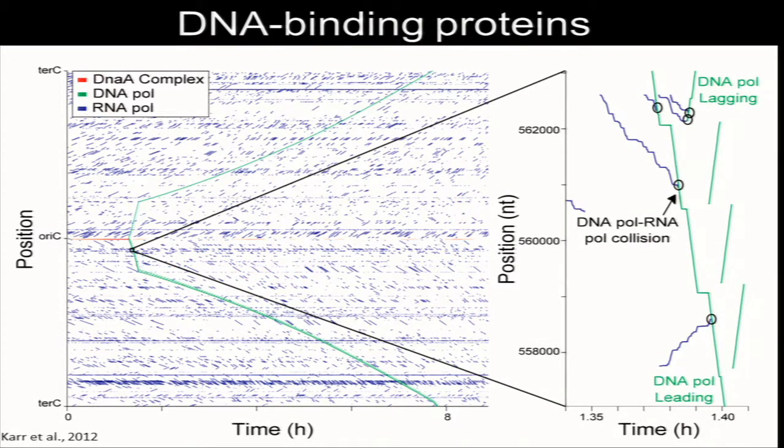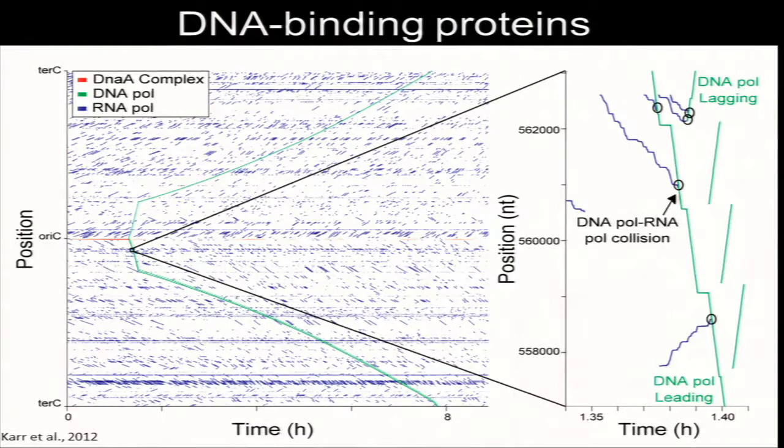You can also make predictions about data which is difficult, if not impossible, to validate experimentally. One example is predicted locations of DNA binding proteins throughout the cell cycle. There is one experimental technique called ChIP-Seq which allows you to quantitate the population and temporal average of this, but using a model, you get the full dynamics as well, which you don't get in experiments. You can drill down even further and look at not just where proteins bind but how they interact, how they collide and the frequency of these collisions.